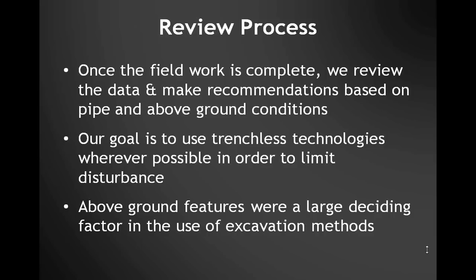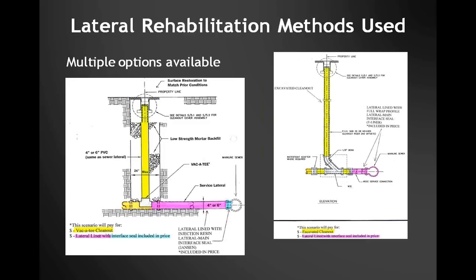After a brief technical difficulty with slide advancement, we continue. We have a few typical scenarios in lateral rehab methods. The standard construction detail gives a clear picture of all major components used in our typical rehab scenarios. The first option is a vacuum-excavated clean-out to limit disturbance, allowing work in close proximity to trees and other above-ground structures. The second is an open-cut excavated clean-out, often needed where different pipe materials join — for example, laterals stubbed out with 6-inch concrete during mainline construction and later connected with 4-inch cast iron, creating a void area around the two pipe materials that were simply pushed together.